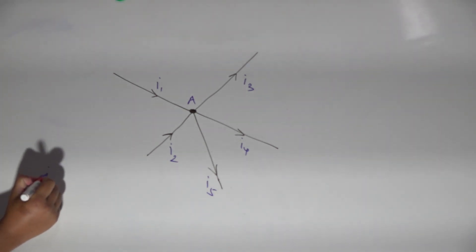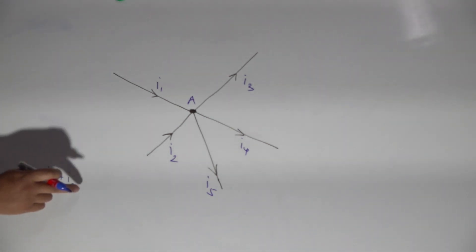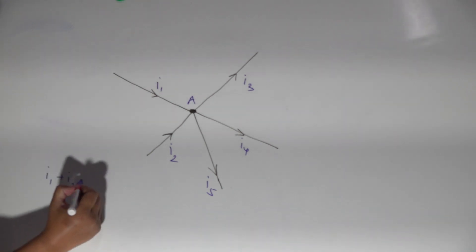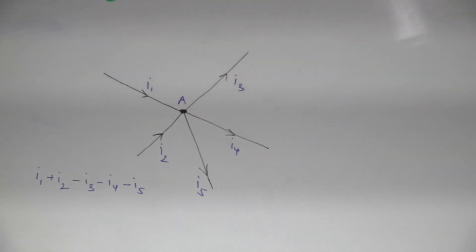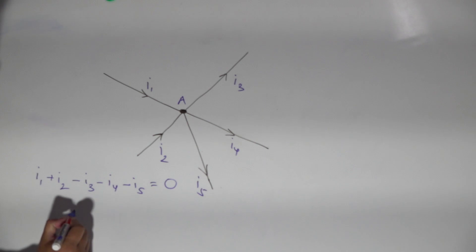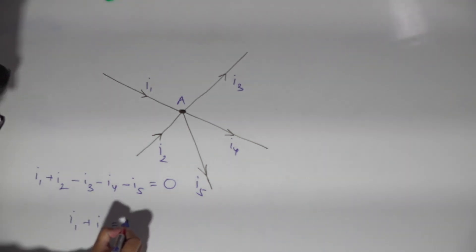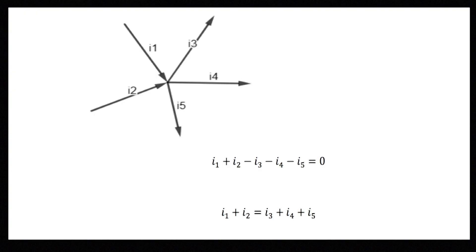Therefore, I1 and I2 are positive since they enter the junction, while I3, I4, and I5 are negative since they leave. According to Kirchhoff's first law, the sum of the currents at the junction equals zero. We can rewrite this as: I1 + I2 = I3 + I4 + I5. From here, you can see that the sum of current entering the junction equals the sum of current leaving the junction.